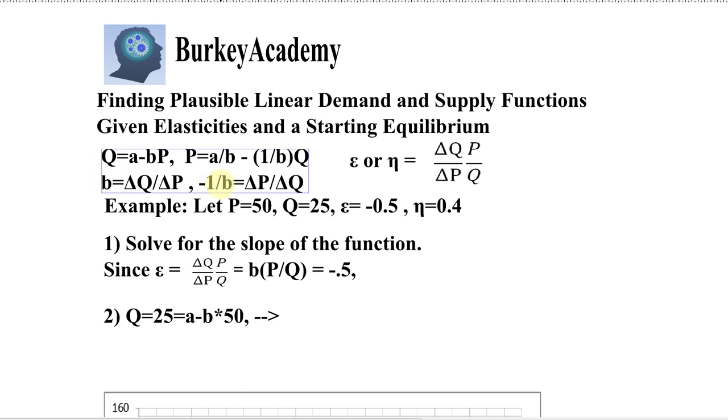One over that b in the demand function, which is the number we see in the inverse demand here, is going to be the flip side of that, ΔP/ΔQ. The rate of change here at which price changes as Q changes. But what we need for the elasticity formula is ΔQ/ΔP. As price changes, how fast does quantity change? What's that rate?